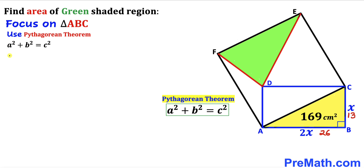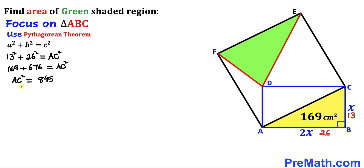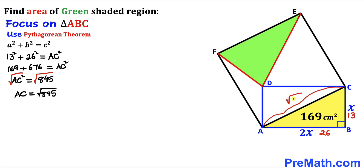Filling in the formula: 13 squared plus 26 squared equals AC squared. Taking the square root of both sides, AC equals the square root of 845. So the hypotenuse AC turns out to be the square root of 845.